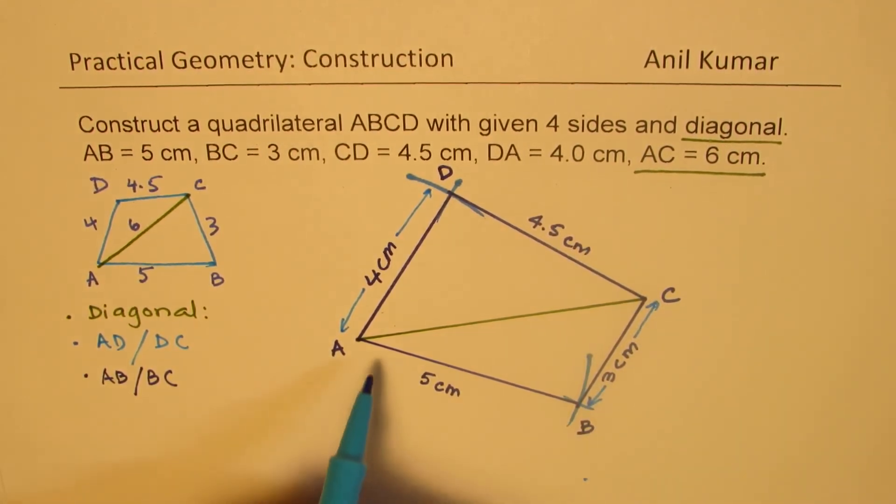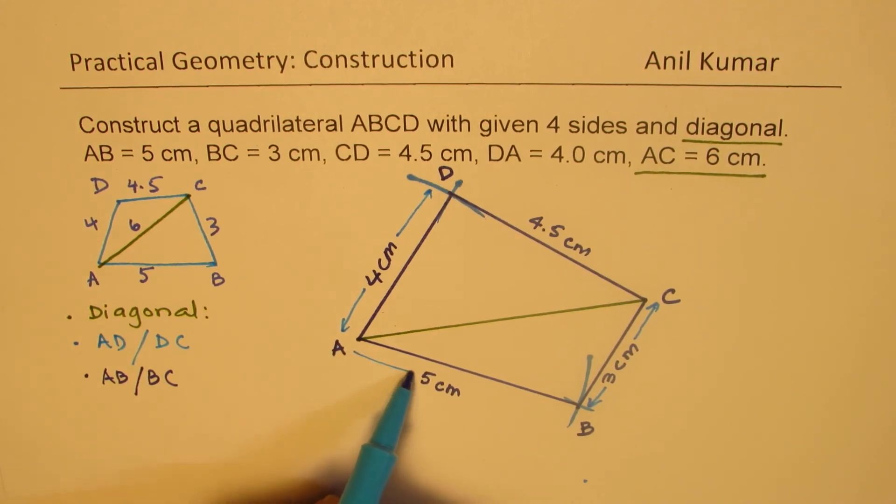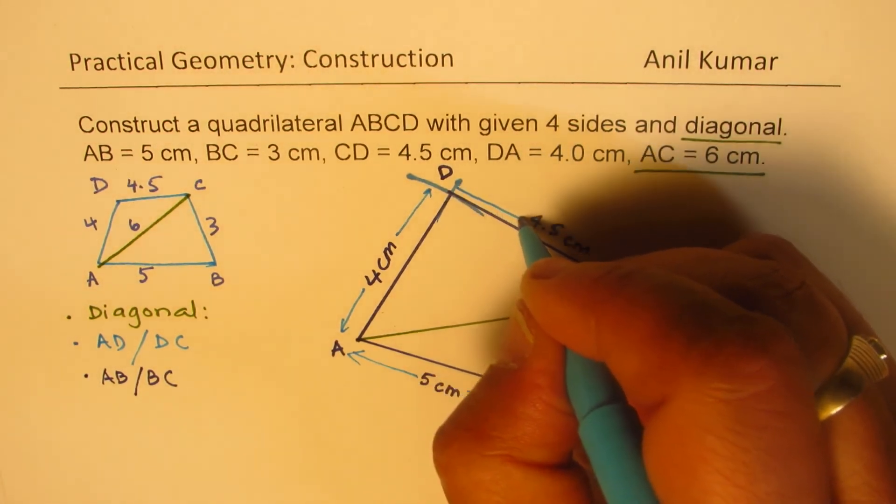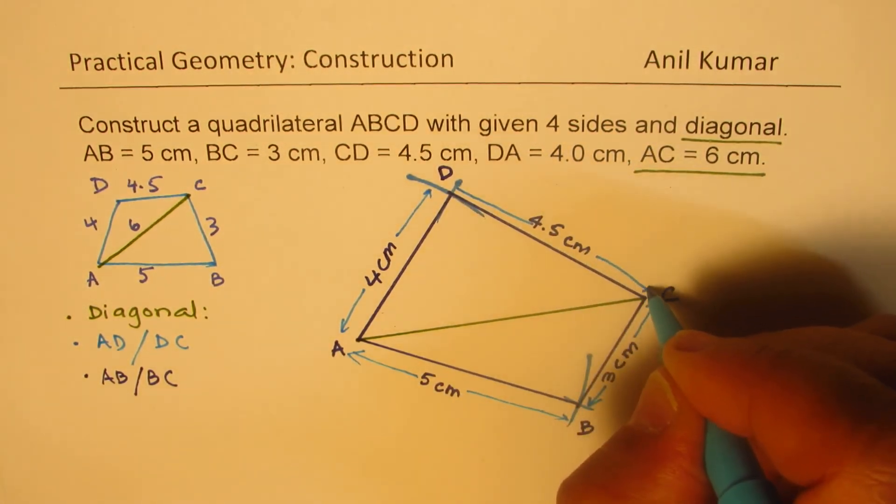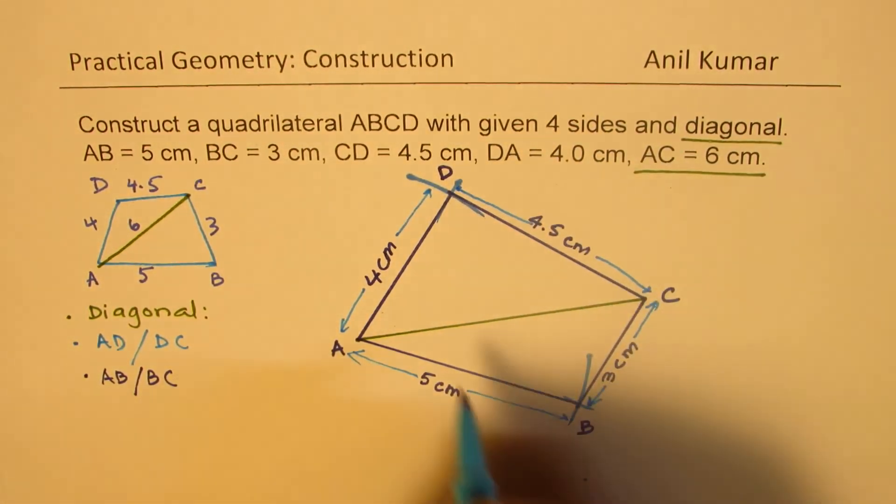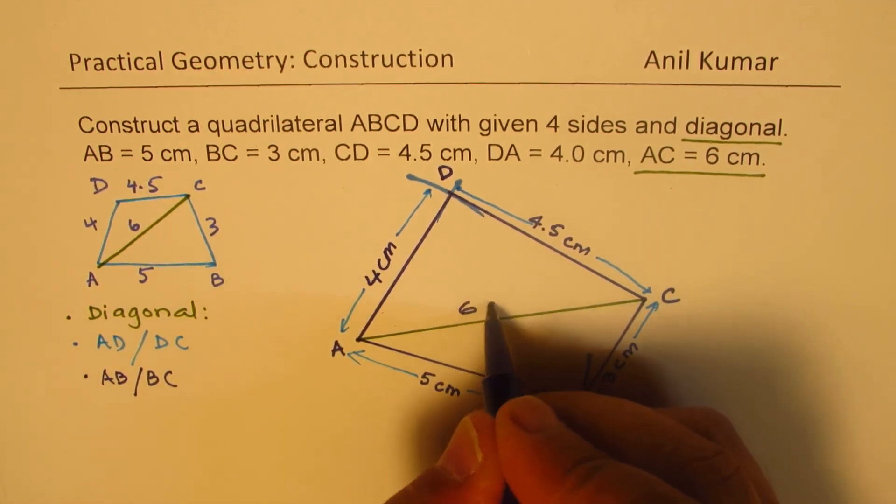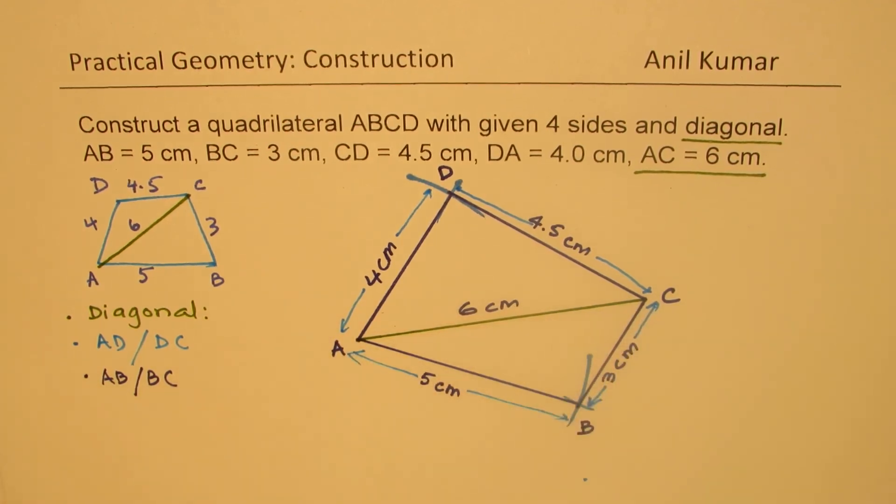So I hope the steps are absolutely clear. The diagonal was 6 centimeters. Even if you write like this 6 centimeters it is known that that is 6 centimeters. So that is how you should be constructing the quadrilateral when its sides and diagonals are given to you. Important step here is to understand that start with the diagonal, and then do each set of sides as shown here.